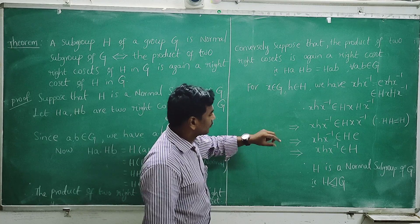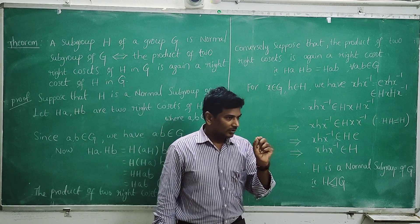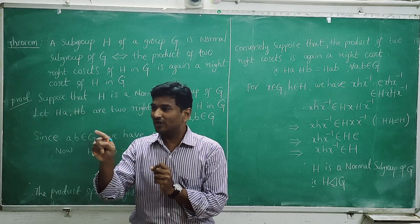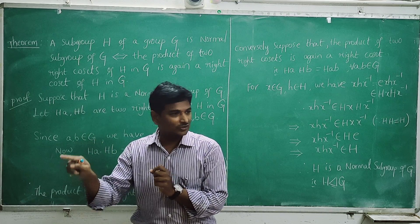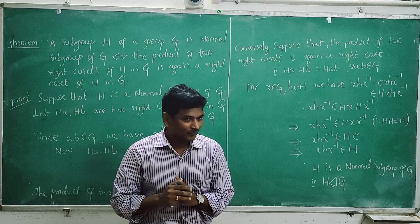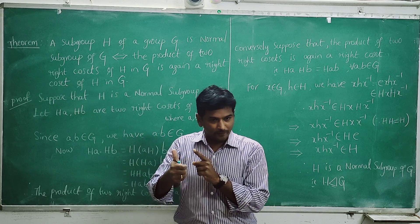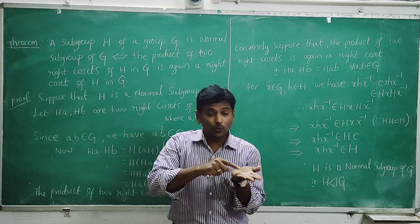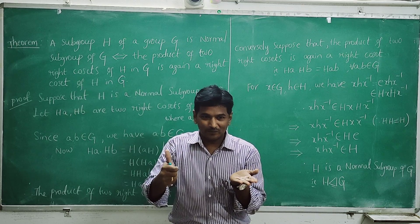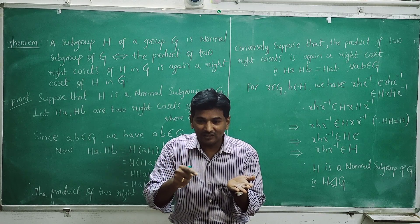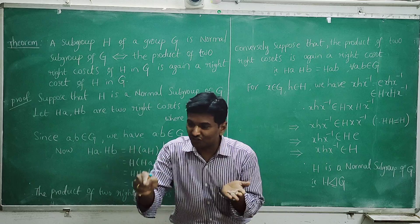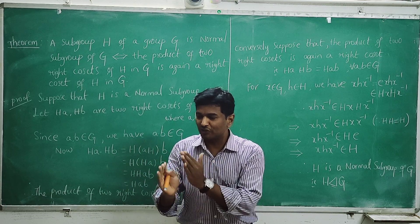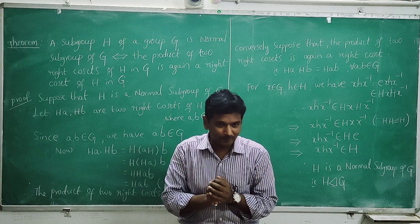Normal subgroup means, according to the definition of normal subgroup, xhx⁻¹ also belongs to capital H for all x in G and h in H. We are going to show that capital H is a normal subgroup.